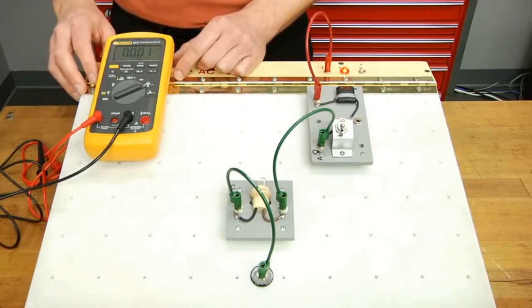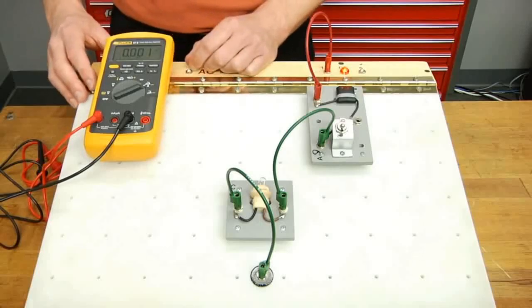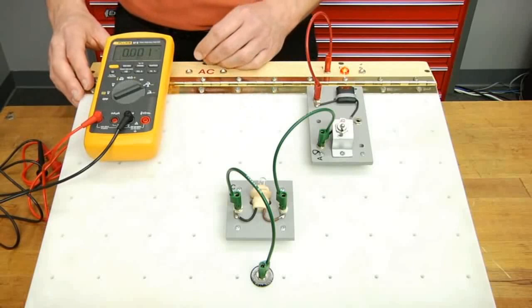Remember, measuring amperage is measurement of the strength of electricity flowing through a circuit. In order to do that, we need to make the digital multimeter part of the circuit. To do this, we need to break the electrical circuit and insert the meter in line.